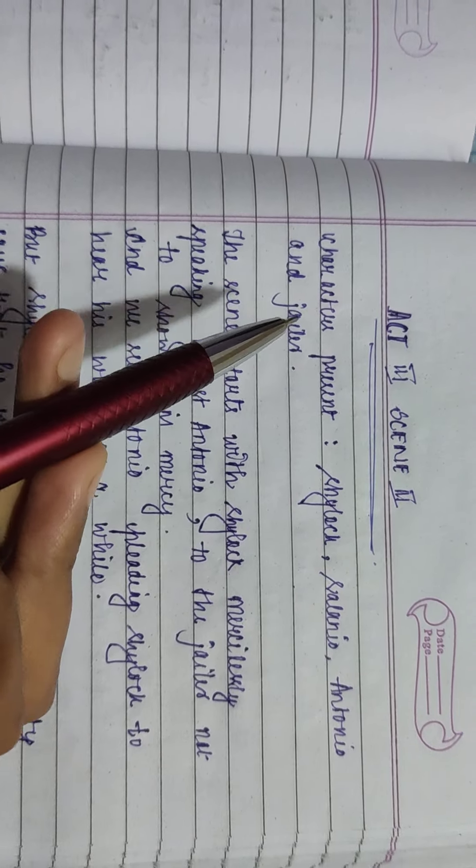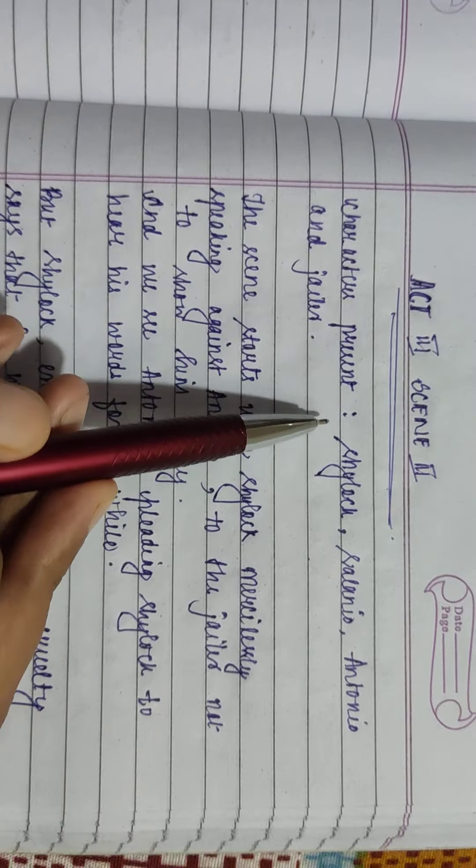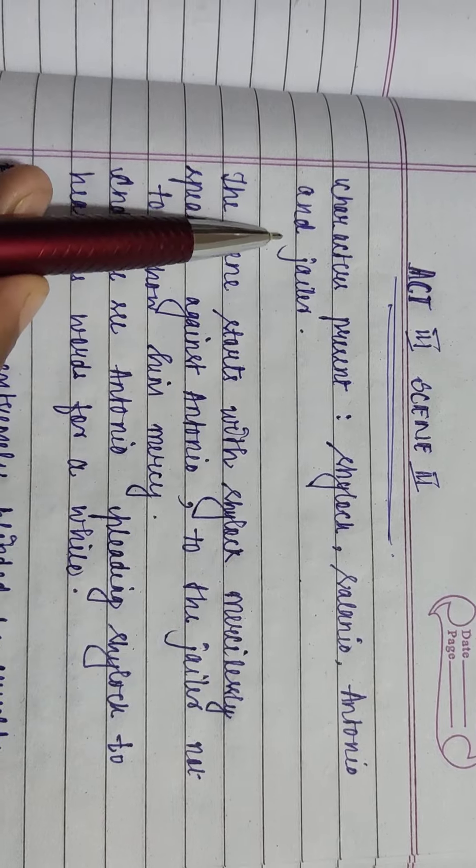The setting of the scene is one of the public streets in Venice and the characters present in this scene are Shylock, Selenio, Antonio, and a jailer.